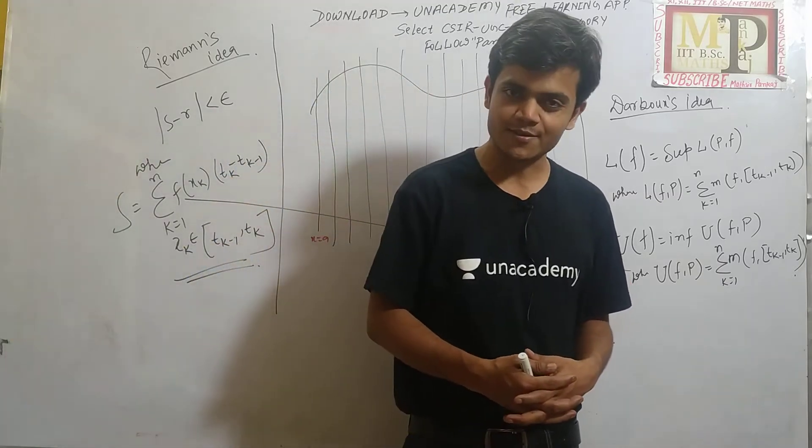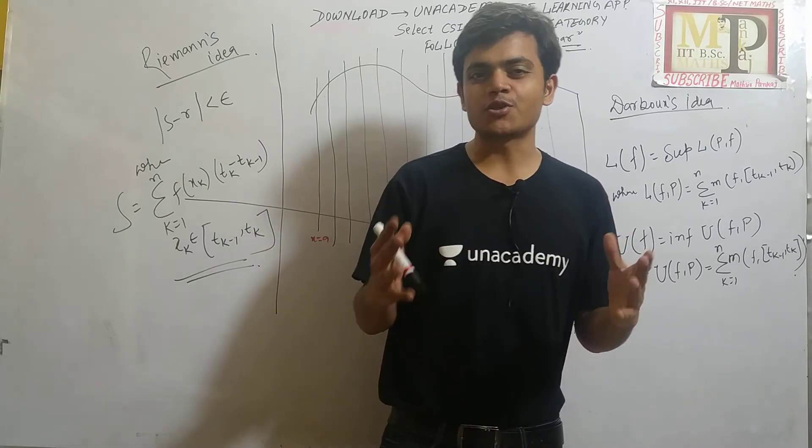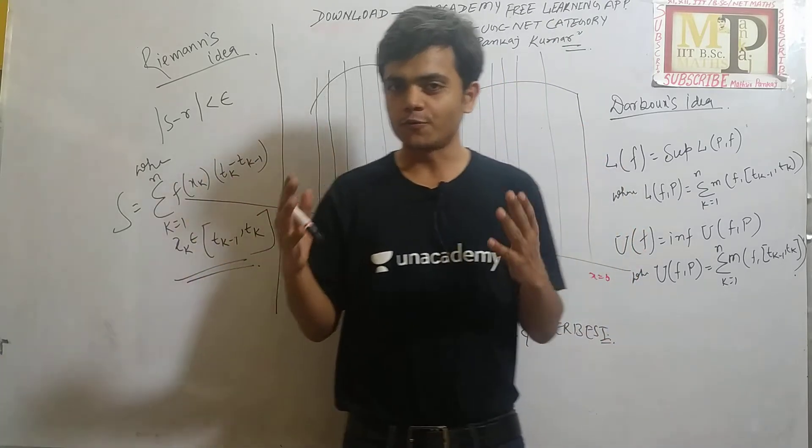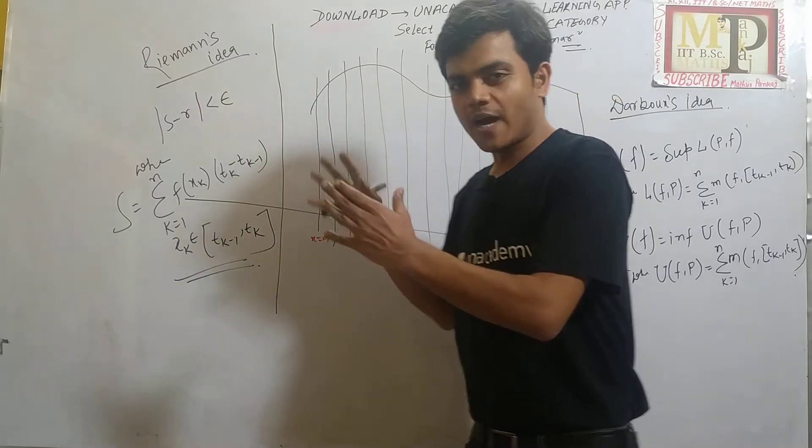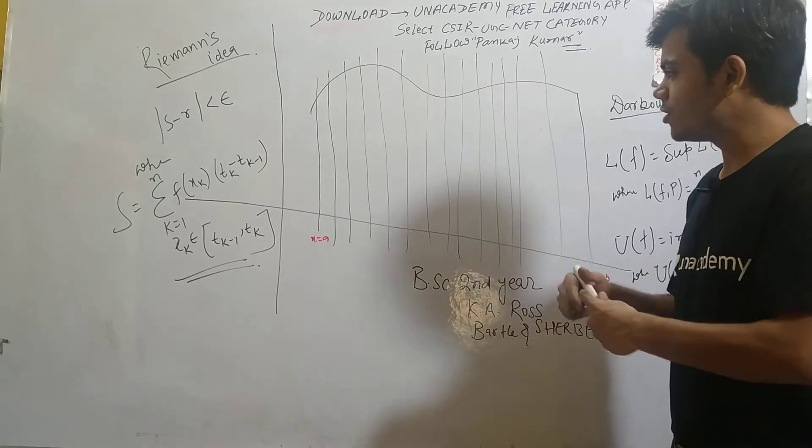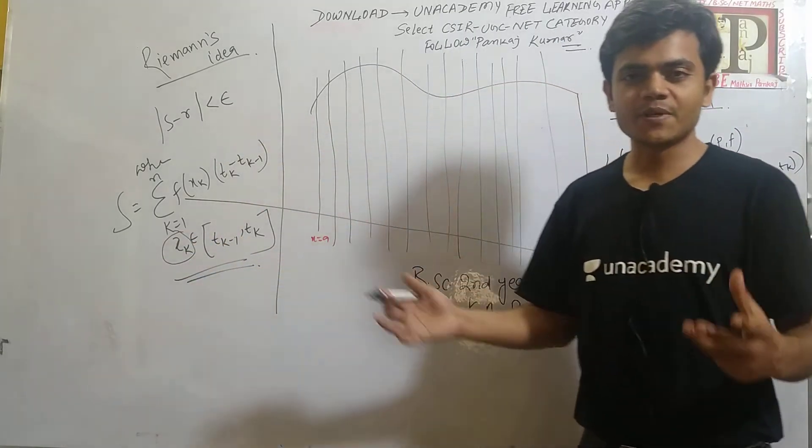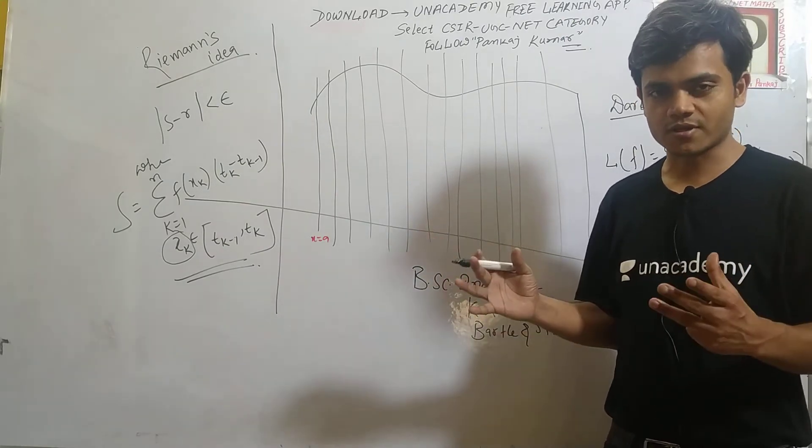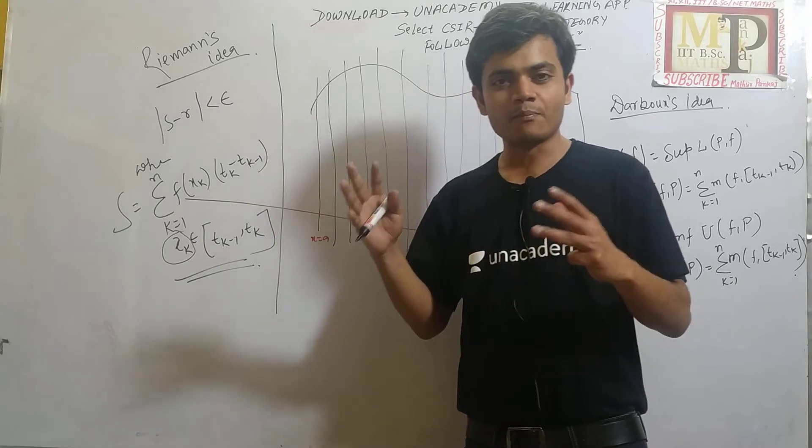After some lessons, we introduce Riemann's idea. Riemann takes only one partition, but he takes this x_k arbitrarily, meaning randomly chosen. The arbitrariness of this x_k makes sense and gives us an idea of integrability.